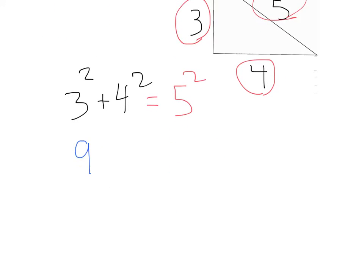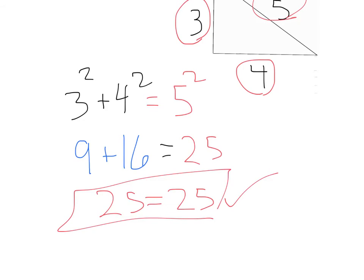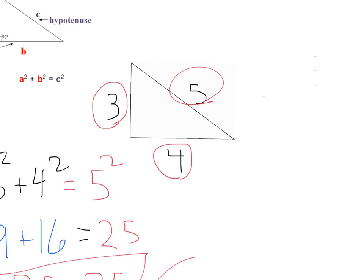Well, 3 squared is 9 plus 4 squared is 16. Does that equal 5 squared or 5 times 5, 25? And 16 plus 9 is 25. And indeed, that does equal 25. Boom! The Pythagorean theorem works on this right triangle.